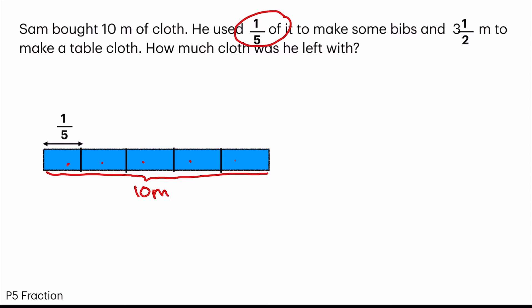So I can use multiplication, one-fifth times 10. So I can cancel and I get two meters. So this part would be two meters. Each unit would be two meters.